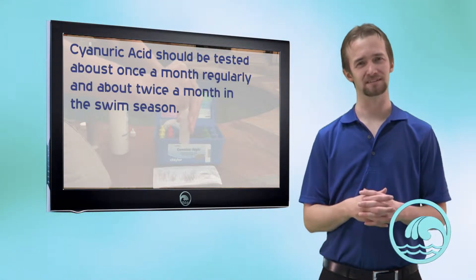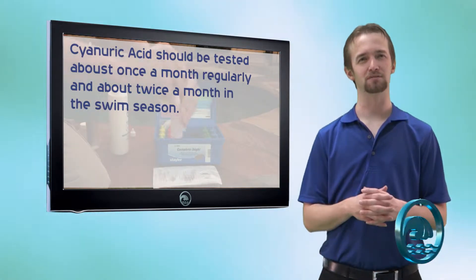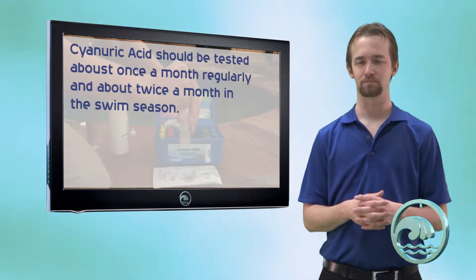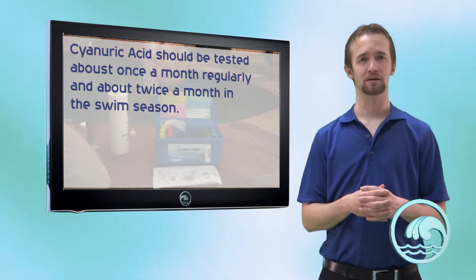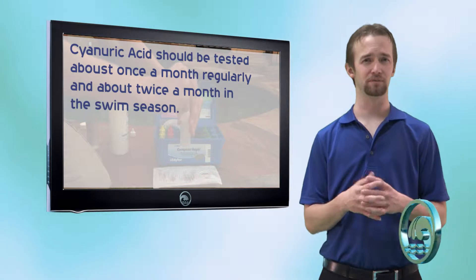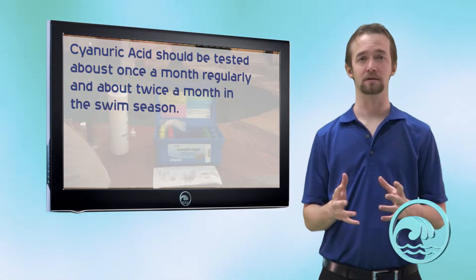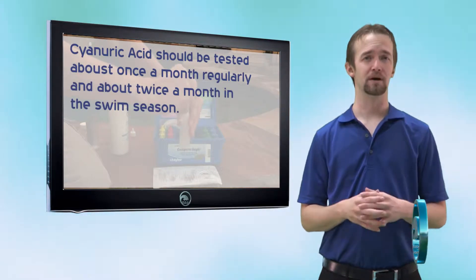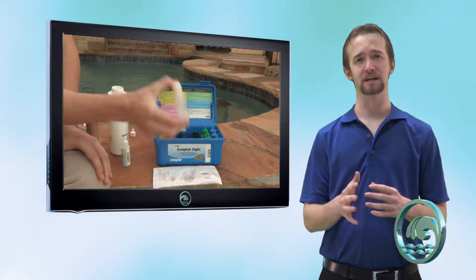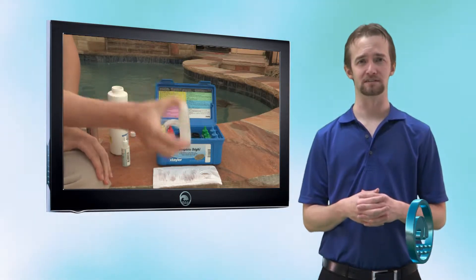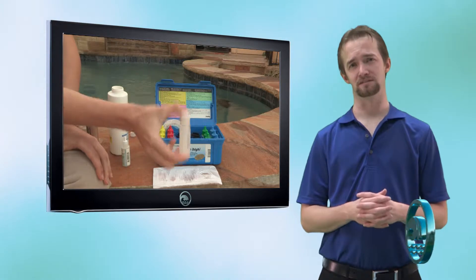Cyanuric acid only needs to be tested once a month during the spring and the fall, and about twice a month in the summer. So these bottles should last you quite a while, even though it seems like you use a lot per test. Now that we have the proper amount of chemical inside the dropper bottle, replace the cap and shake it up for about 20 to 30 seconds. Let it settle for about 15 to 20 seconds.